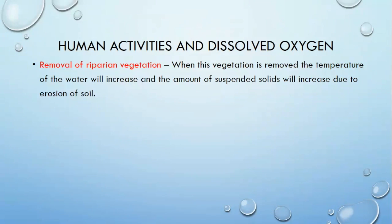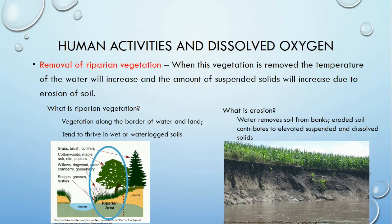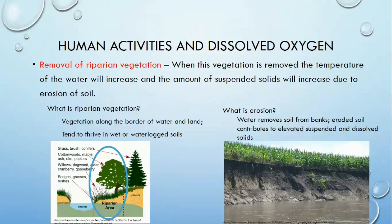Some human activities can influence dissolved oxygen, and usually in a negative way. Removing riparian vegetation can cause a rise in water temperature due to loss of shade and an increase in suspended solids from soil erosion. Riparian vegetation is the vegetation along the border of water and land — it can range from large trees to grass and weedy plants, and tends to thrive in wet or waterlogged soil. Erosion happens after the riparian vegetation has been removed and water carries away soils from the bank, elevating suspended and dissolved soil levels, which causes lower levels of dissolved oxygen.